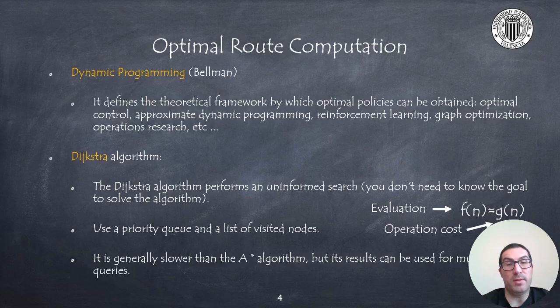Algorithms for calculating optimal routes have their origins in dynamic programming. The theoretical framework of dynamic programming techniques was established by Bellman in the 1960s, allowing to compute optimal policies with applications on a wide variety of fields such as optimal control, approximate dynamic programming, reinforcement learning, graph theory, operational research, among others.